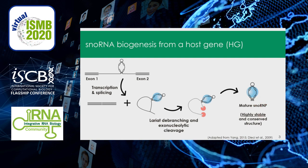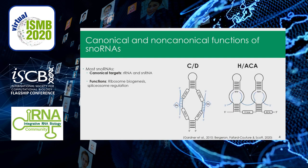This snoRNA can act in many different ways in the cell. The basic function of snoRNAs is to guide modifications on target RNA. For most snoRNAs, their canonical targets are ribosomal RNA and small nuclear RNA, and the modifications on these target RNAs are important in ribosome biogenesis and spliceosome regulation. Typically, snoRNAs are divided into two types: CD-box snoRNAs and HACA-box snoRNAs, which respectively guide methylation and pseudouridylation on target RNA.